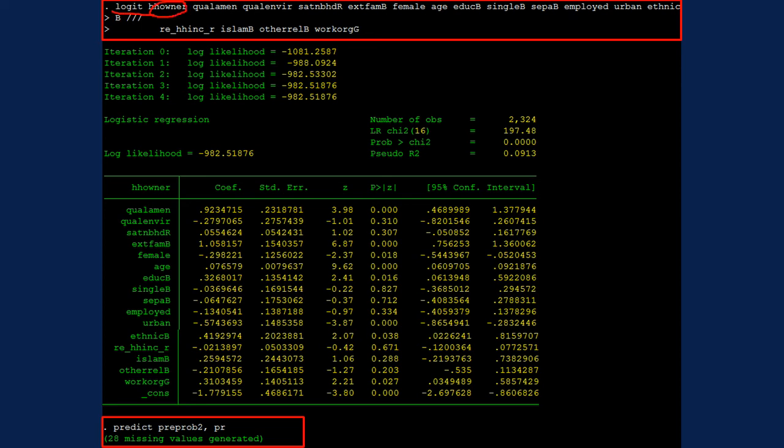Logit, this is the outcome, and these are covariates. And I obtained the predicted probability using the predict command here.